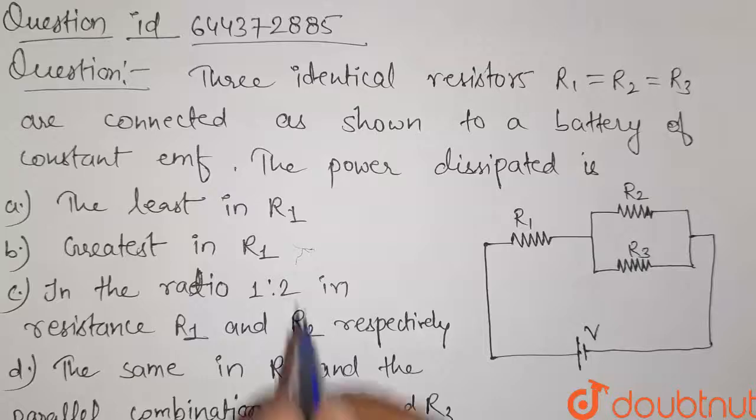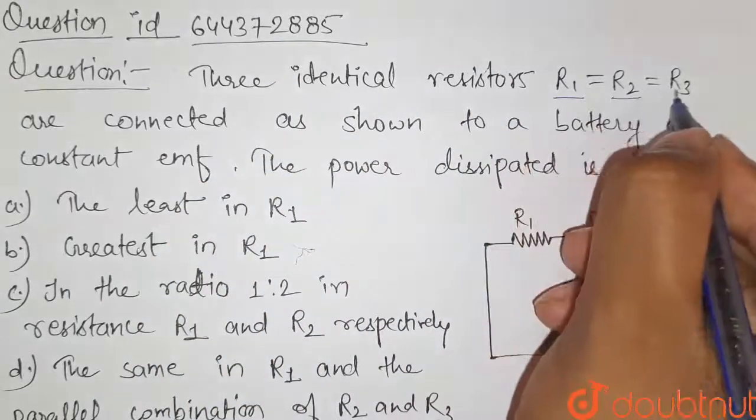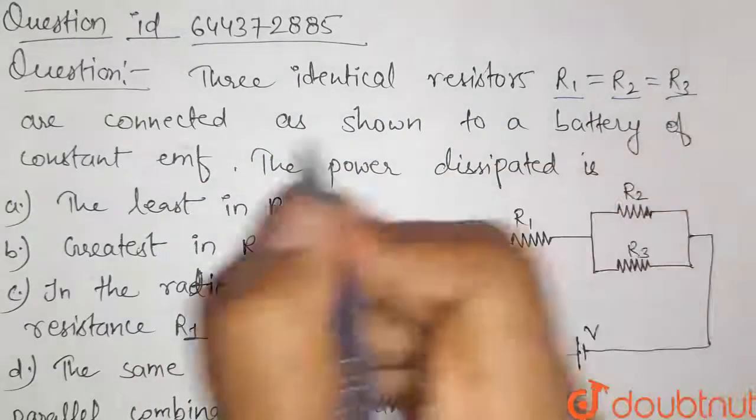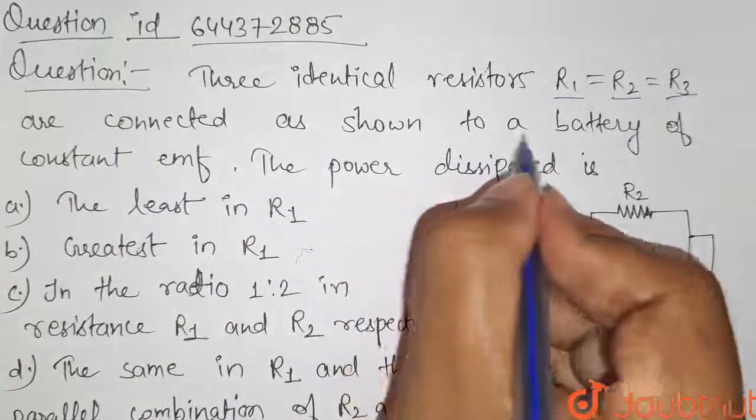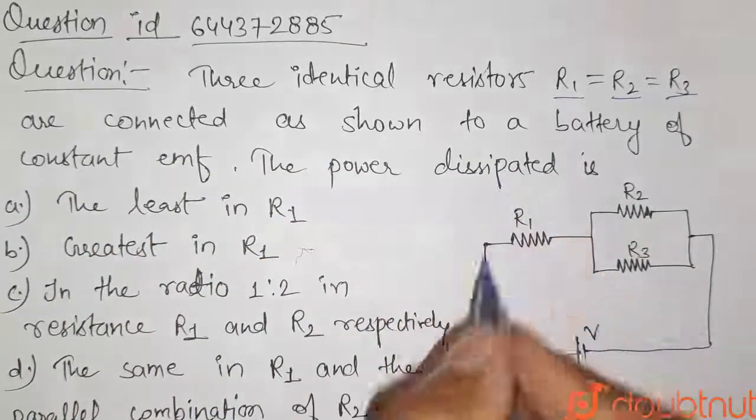Hello students, here's our question. Three identical resistors R1 equals R2 equals R3 are connected as shown to a battery of constant emf. The power dissipated is...